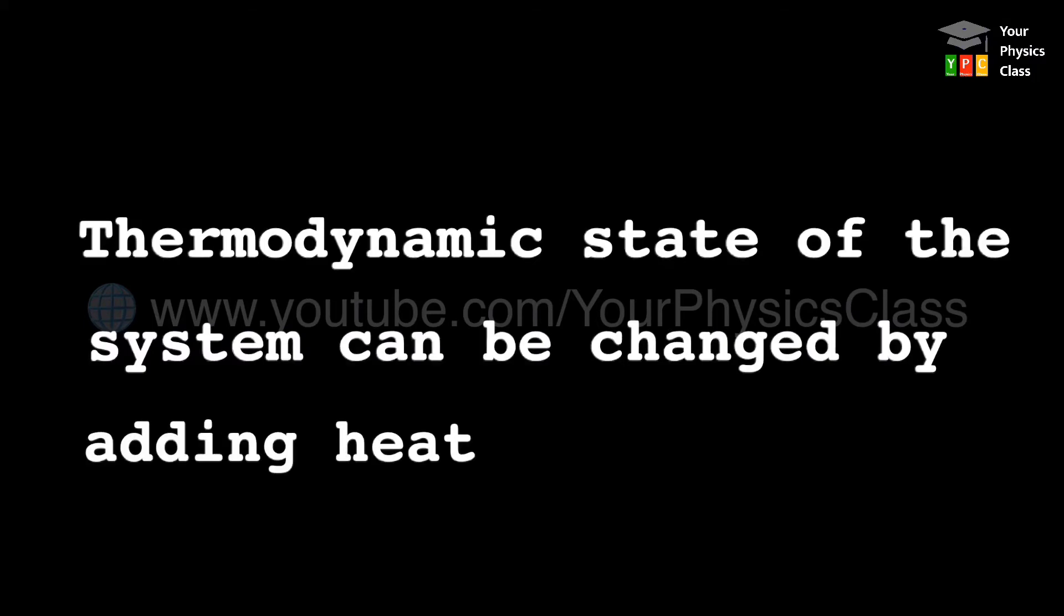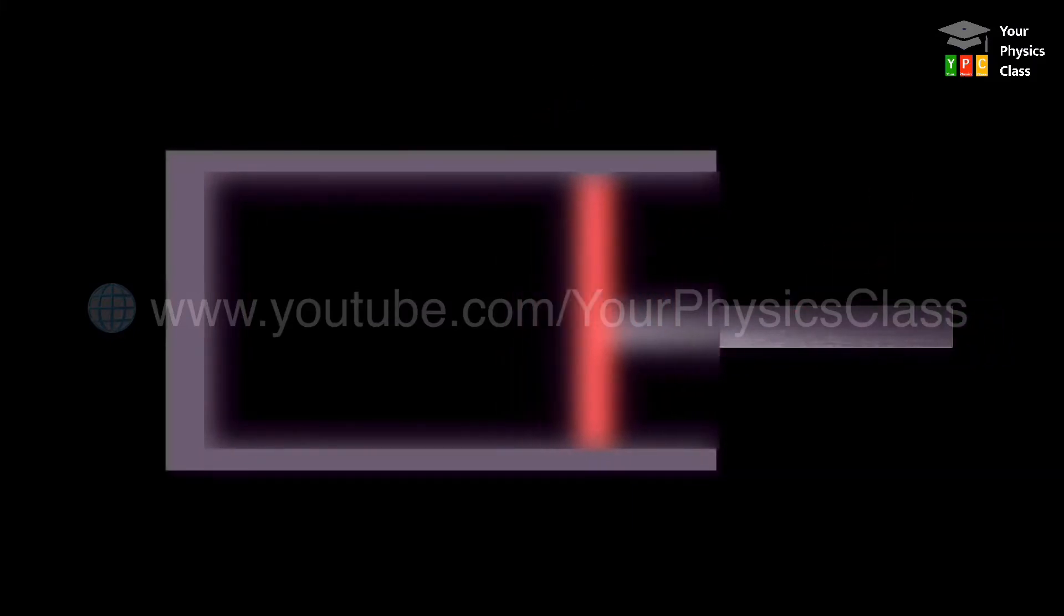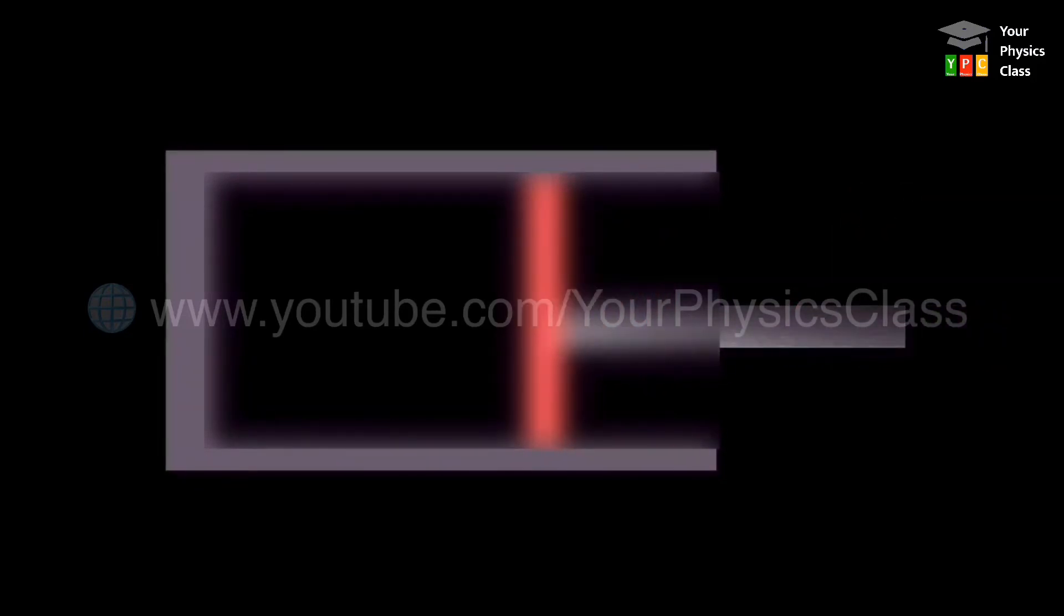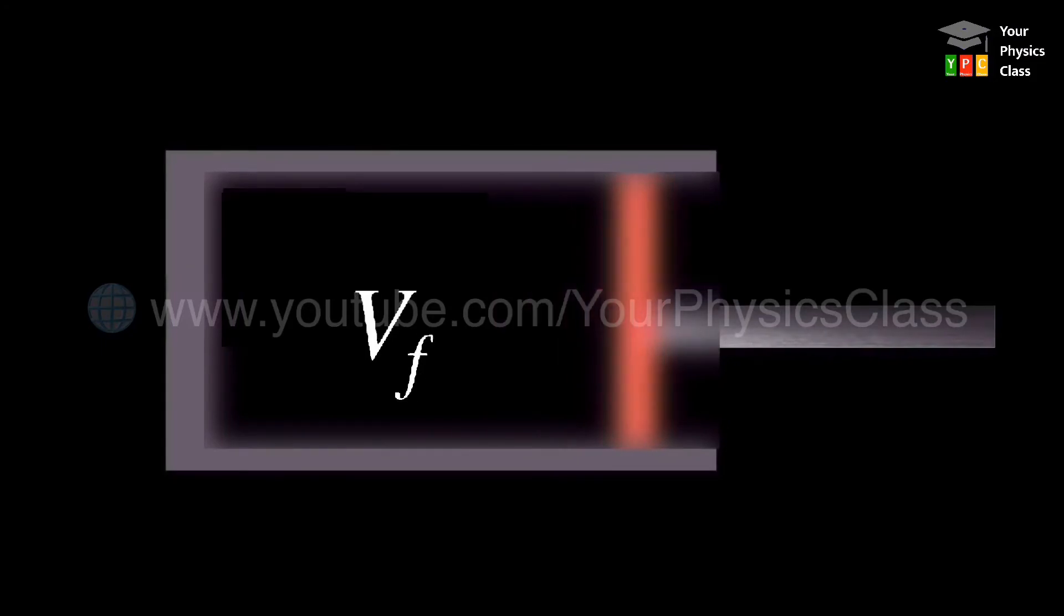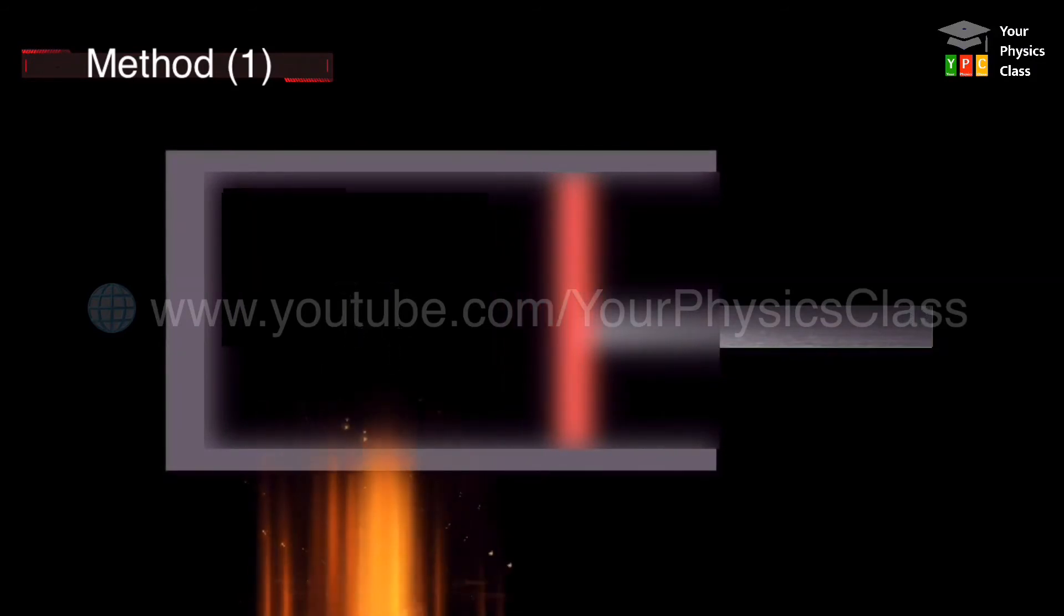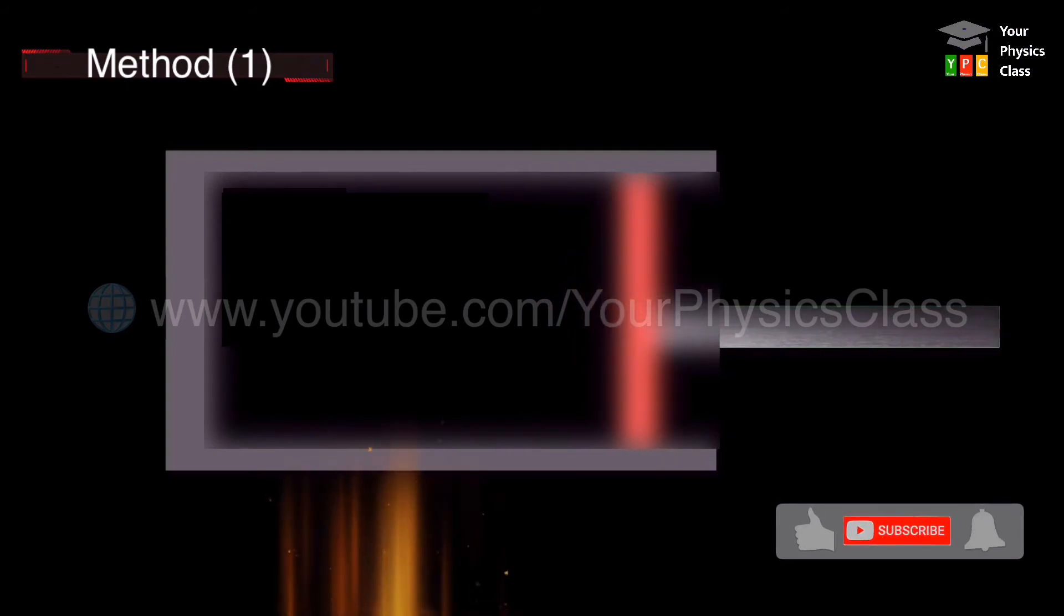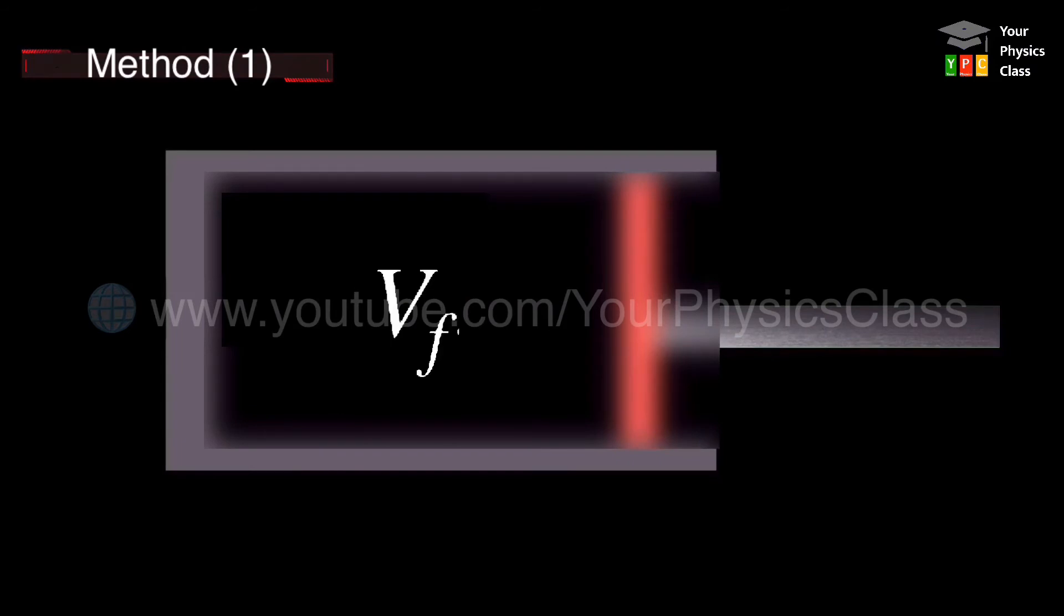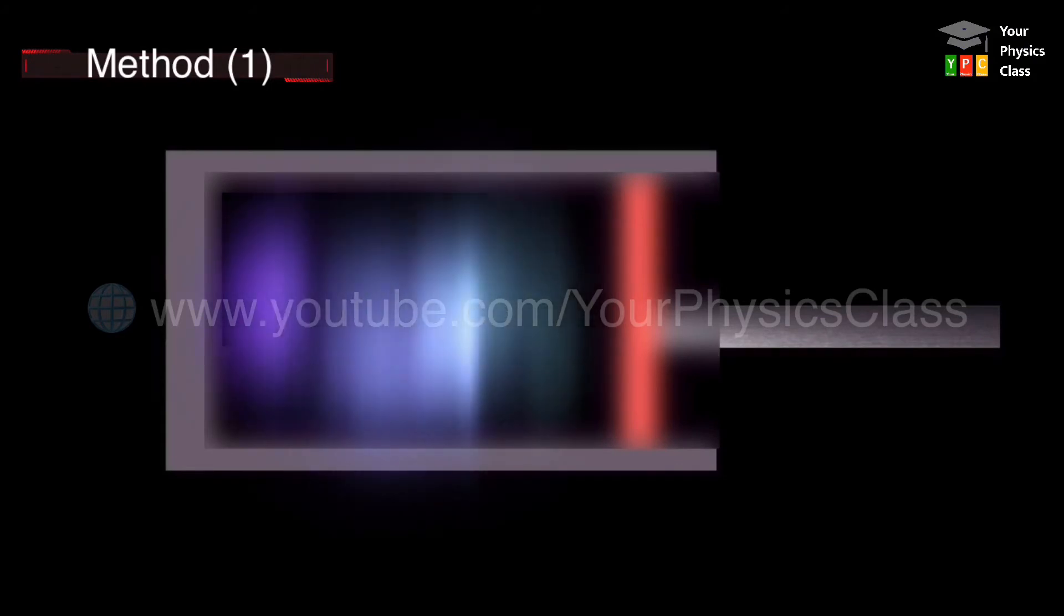Thermodynamic state of a system can be changed by adding heat to the system. Let us consider a thermodynamic system consisting of an ideal gas confined to a cylinder with a movable, frictionless, and massless piston. To change the initial volume VI of the gas to final volume VF at a constant temperature, there can be two ways. The first method is elaborated on the screen. In this case, the gas is heated slowly through an external source in a controlled manner so that it expands at constant temperature. It reaches the final volume VF isothermally, that means without change in temperature. The system absorbs a finite amount of heat during this process.